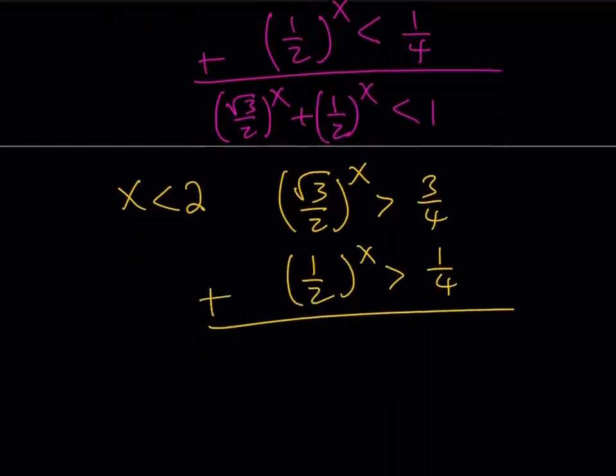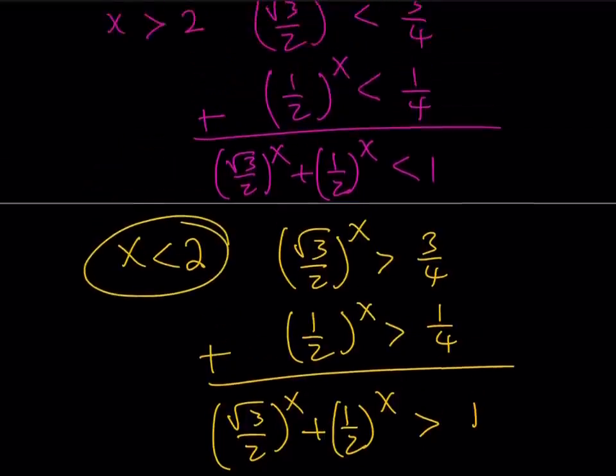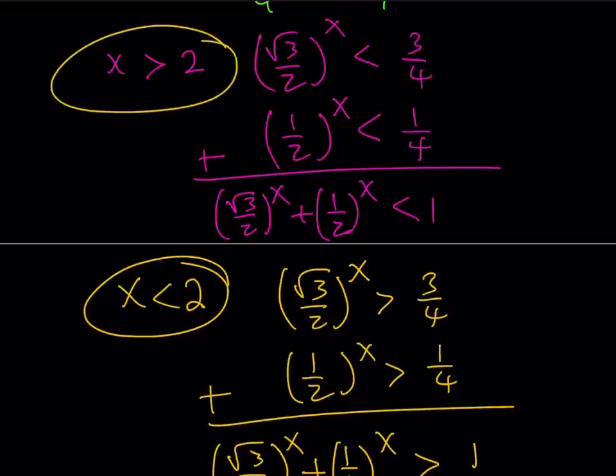So, their sum, which is the left-hand side of our equation, root 3 over 2 to the power x, plus 1 half to the power x is going to be greater than 1. What is that supposed to mean? We want it to equal 1, but it's just like less than 1 or greater than 1, which means that anything in this interval is not going to be a solution. So, if x is less than 2, there are no solutions. If x is greater than 2, there are no solutions. If x is equal to 2, then we have a solution. And that is the only solution.